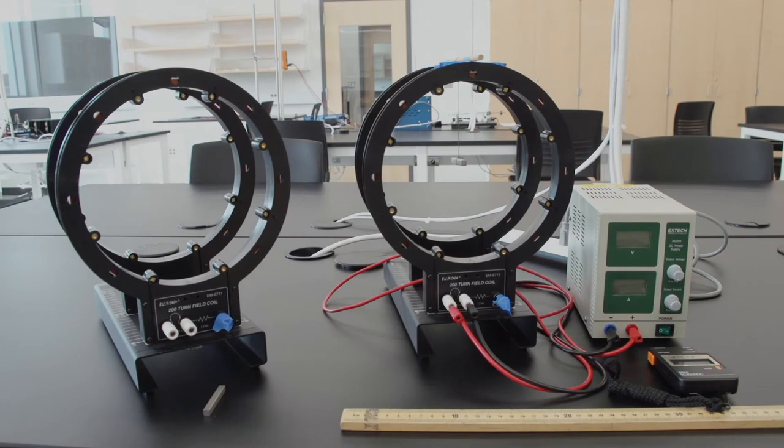Before we get started, it would be good just to look at the Helmholtz coil itself. It's the most important part of this experiment. On the right is the one that we use, and on the left is one that is a twin to that that we can move around and look at more carefully.